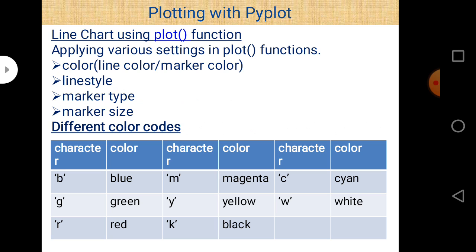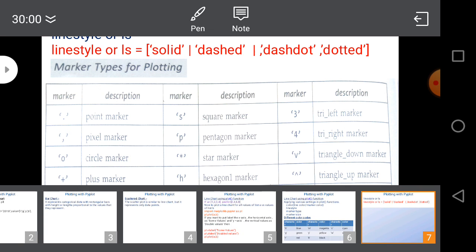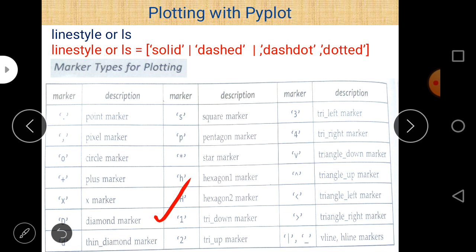You can use a single character or the full color name as a shortcut. Line styles are not used in bar chart and scatter chart, but marker types are used in both. Different marker types include: D for diamond marker, S for square marker, circle marker, and plus marker. These are the four important marker styles.